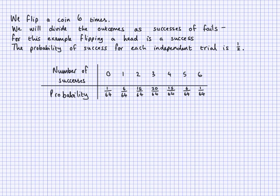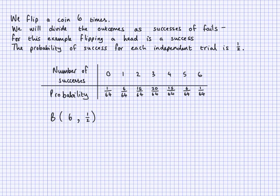Here is the binomial distribution for n=6 trials and p=1/2. Flipping a coin six times with heads as success, the number of heads can range from zero to six. The probability of zero heads is 1/64, one head is 6/64, and two heads is 15/64. This table is described by B(6, 1/2), where 1/2 is the probability of heads on each of the six independent throws.